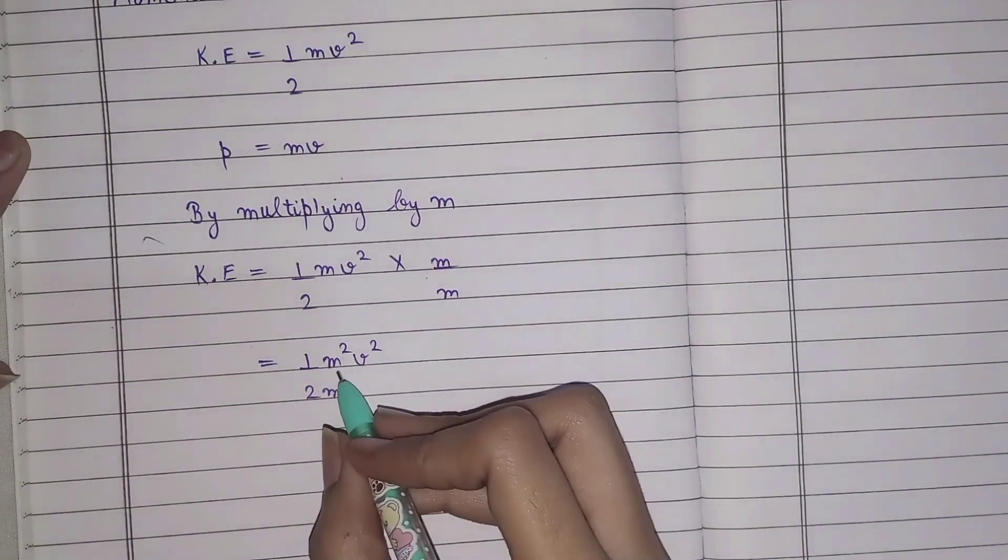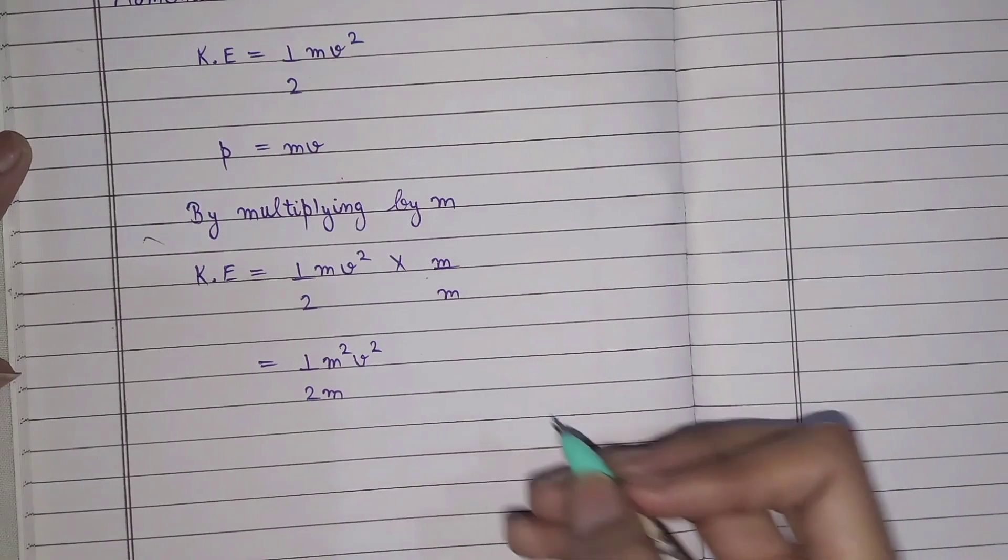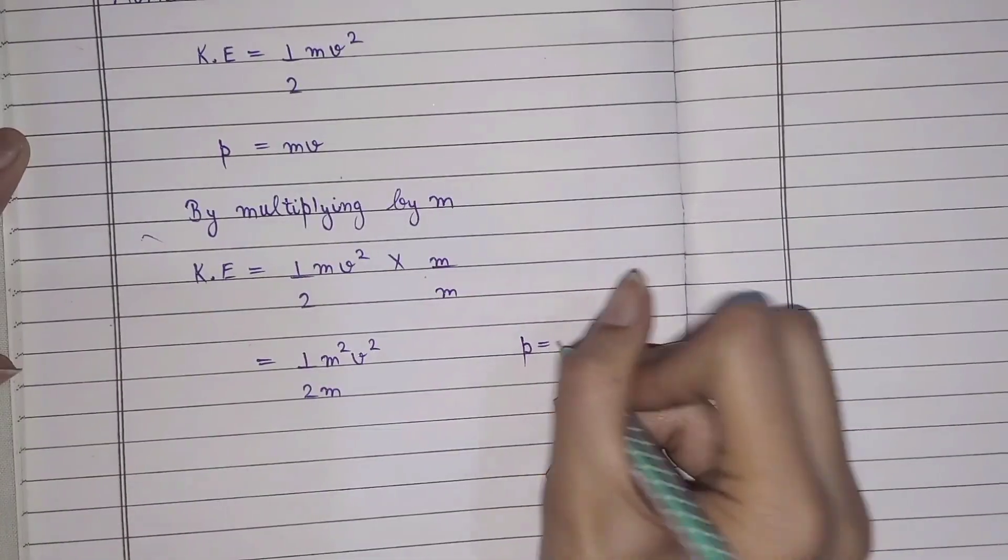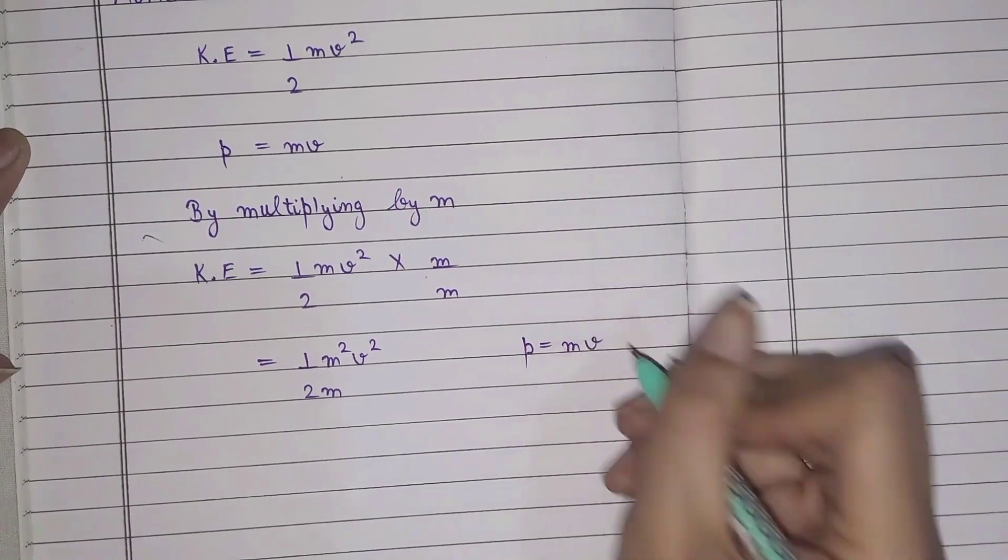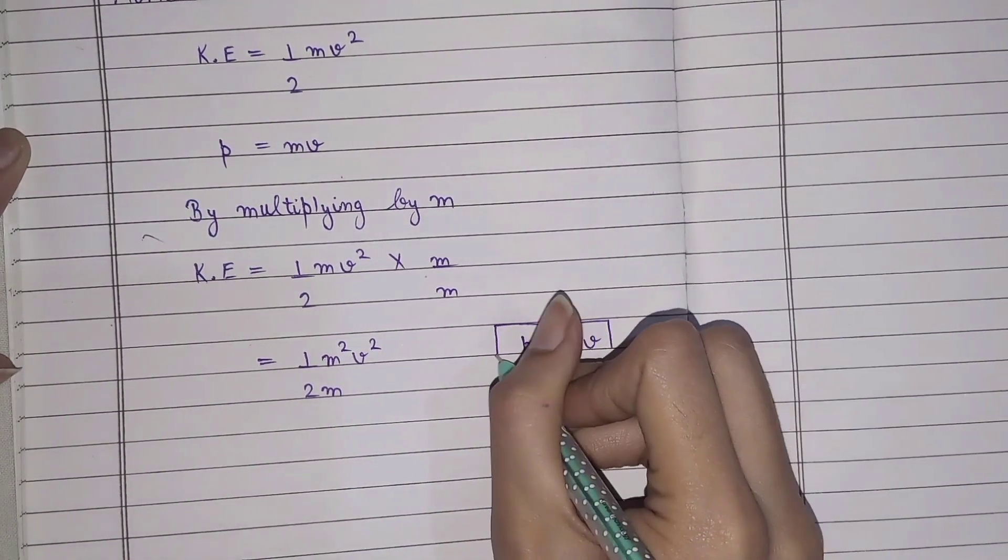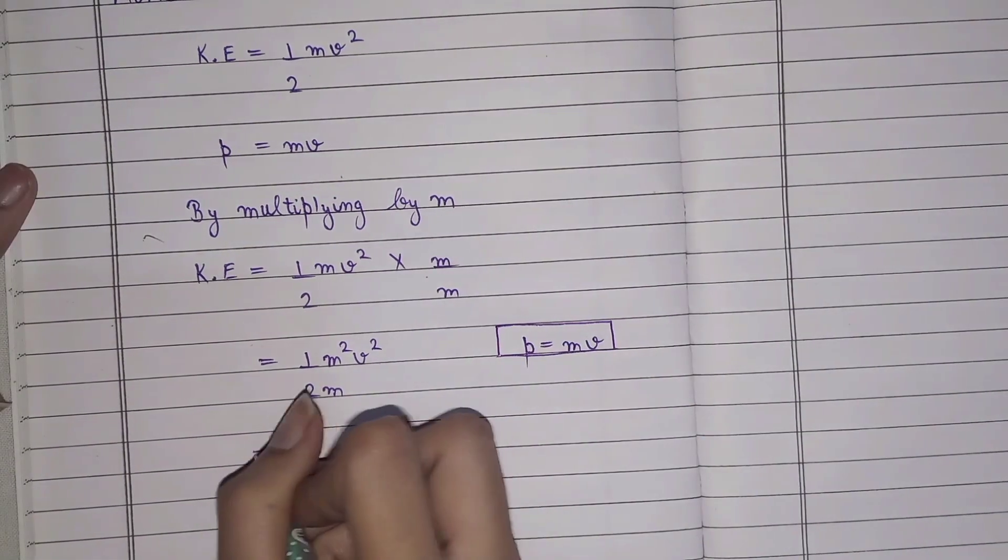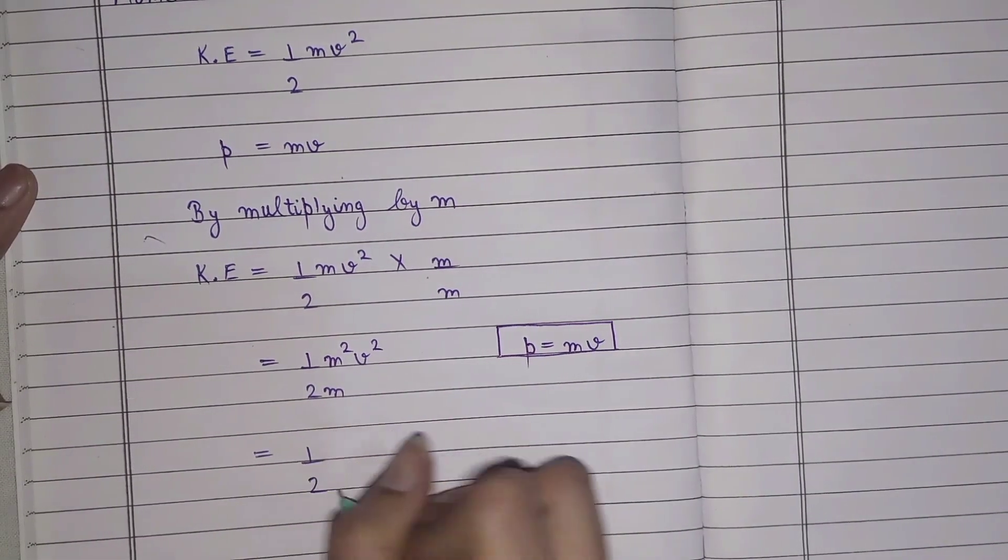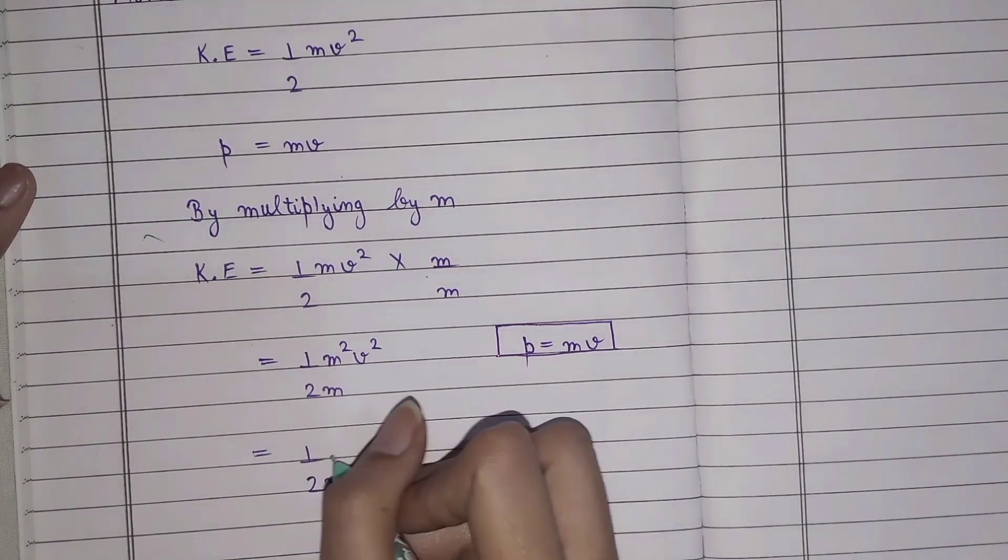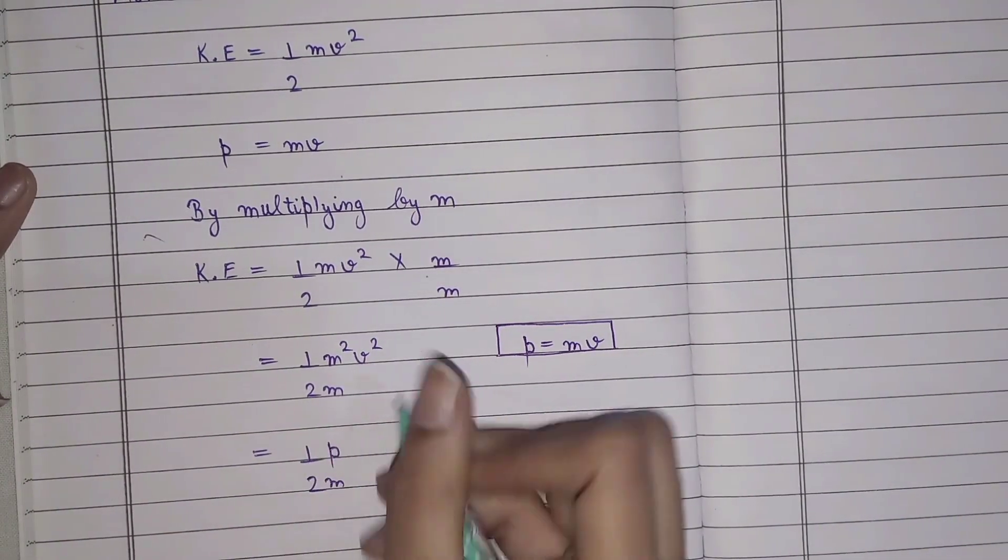So we all know mv is equal to p, that is linear momentum. So now what we'll do is keep 1/2 m as it is, and where we have written mv, we will write p instead, and we'll square it.